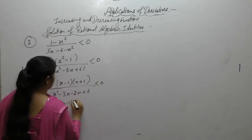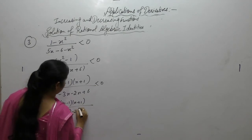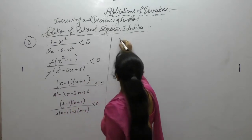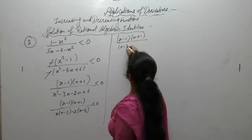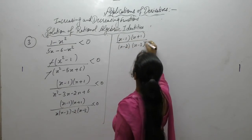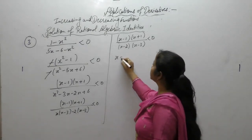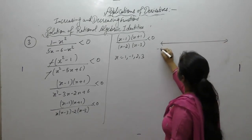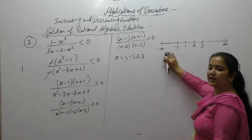We get factors (x minus 1)(x plus 1) over (x minus 2)(x minus 3) less than 0. Setting all factors to 0 gives x as minus 1, 1, 2, 3. Draw these on the number line from minus infinity to infinity with points minus 1, 1, 2, 3 and check signs for each interval.